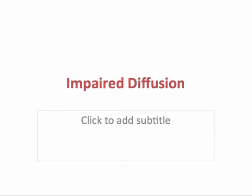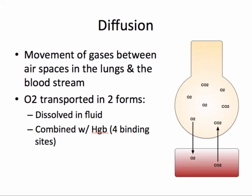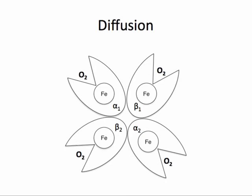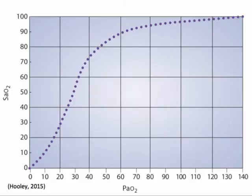Next, we will look at problems of impaired diffusion. Diffusion is the movement of gases between the air spaces in the lungs and the bloodstream. In order to have adequate diffusion, you need a functionally adequate alveolus at an appropriate distance from a nearby vessel, adequate blood flow in that vessel, with an adequate amount of hemoglobin. Oxygen is transported in two forms: dissolved in fluid or combined with hemoglobin. Hemoglobin is essential to the reception and distribution of oxygen. When bound to oxygen, hemoglobin is referred to as oxyhemoglobin.